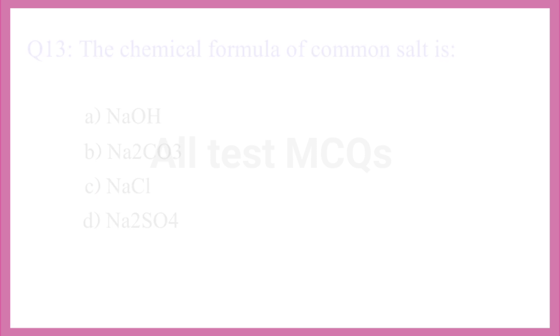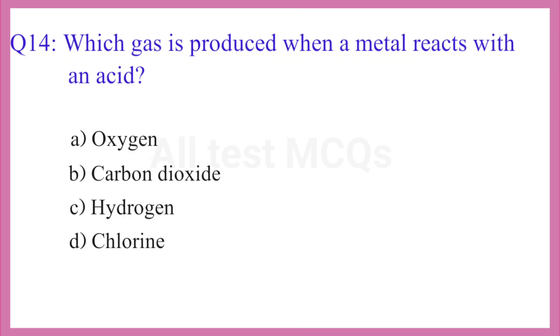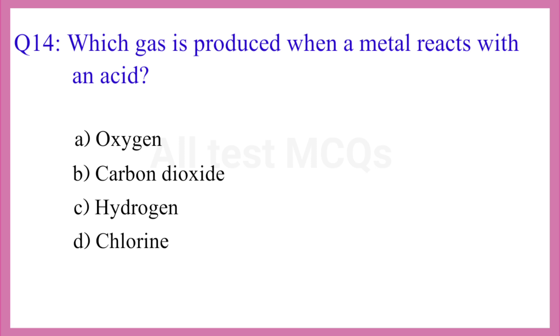Question No. 14. Which gas is produced when a metal reacts with an acid? The correct answer is option C. Hydrogen.